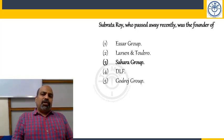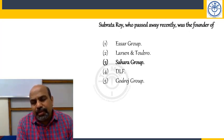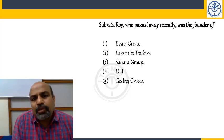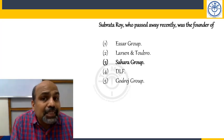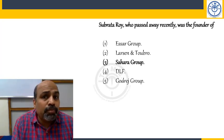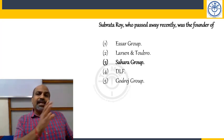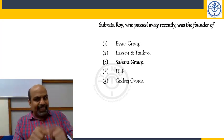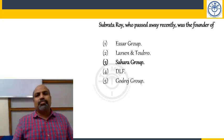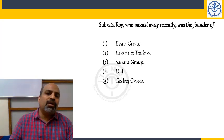Subrata Roy, founder of Sahara Group, passed away recently. The Essar Group is owned by the Ruia family — Shashi and Ravi Ruia — which is why it's called 'SR' Group. L&T — Larsen & Toubro — was started by two people from Denmark: Henning Larsen and Søren Toubro. DLF stands for Delhi Land and Finance, India's largest real estate company. Adi Godrej is the chairperson of the Godrej Group.